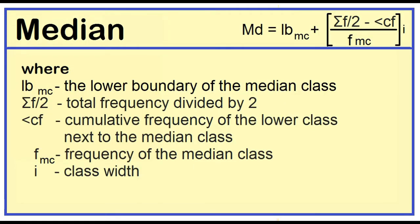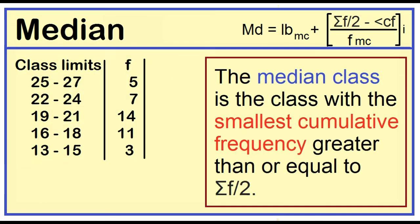Median is equal to the lower boundary of the median class plus the quantity — one-half of the total frequency minus the cumulative frequency of the lower class next to the median class — divided by the frequency of the median class, times the class width. The median class is the class with the smallest cumulative frequency greater than or equal to one-half of the total frequency.